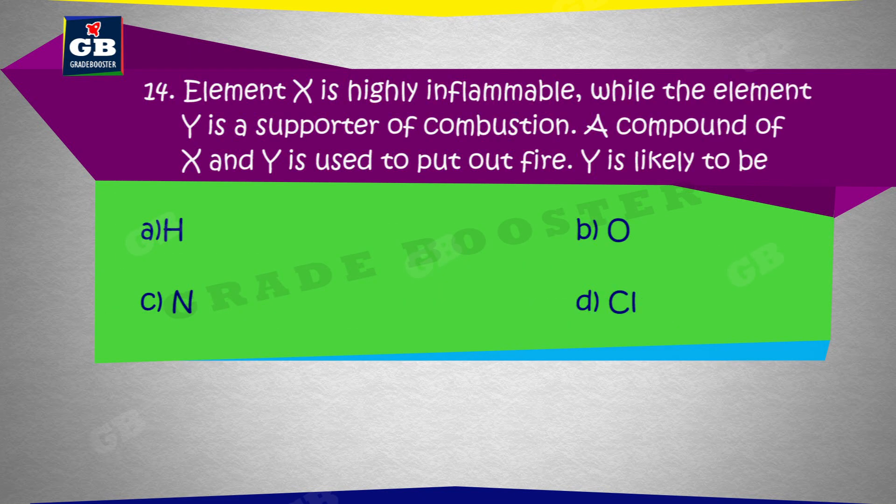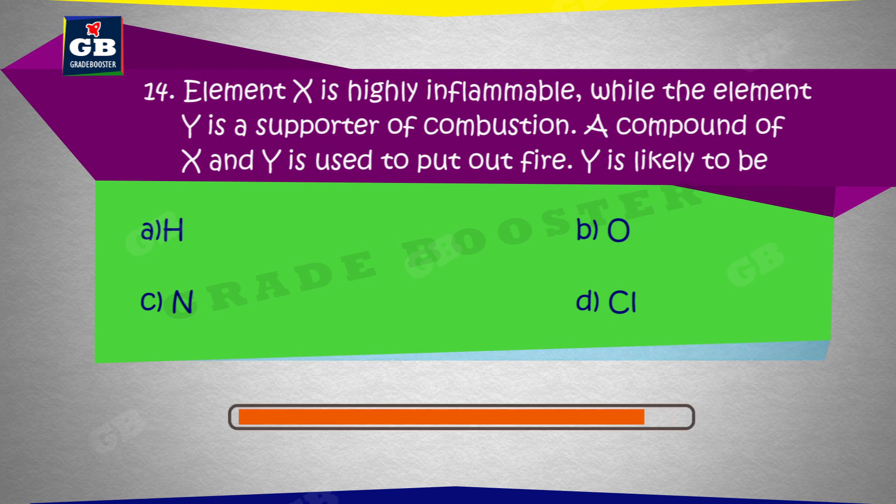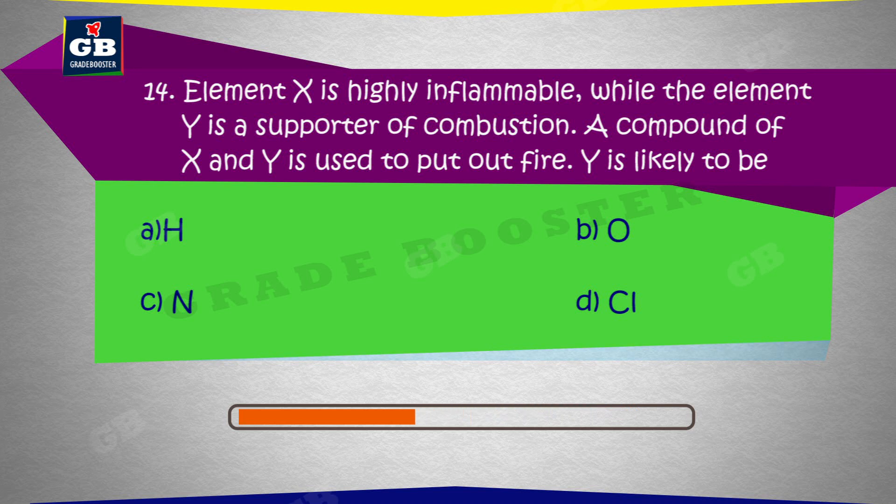Element X is highly inflammable while the element Y is a supporter of combustion. A compound of X and Y is used to put out fire. Y is likely to be: A. Hydrogen, B. Oxygen, C. Nitrogen, D. Chlorine.